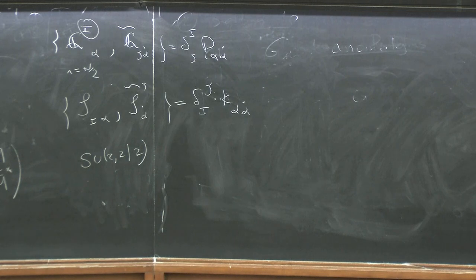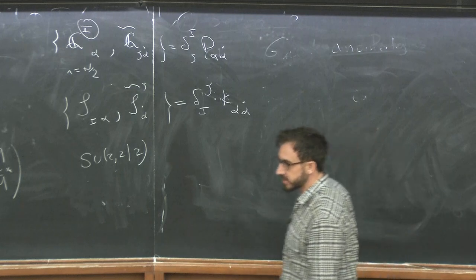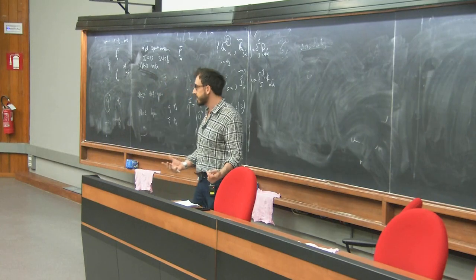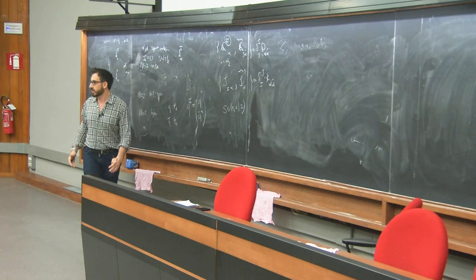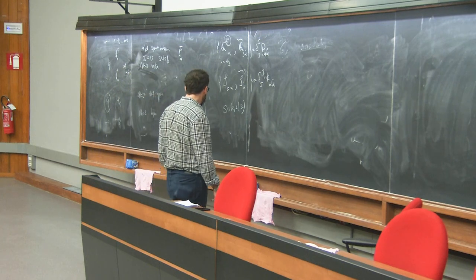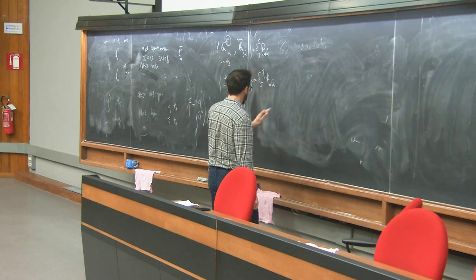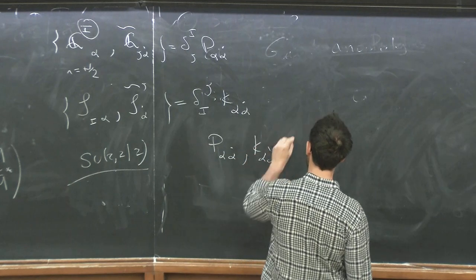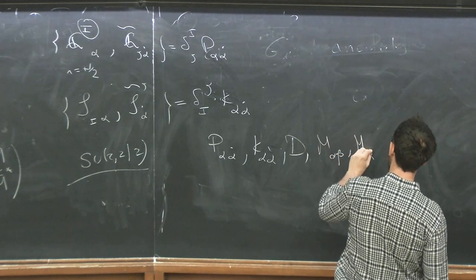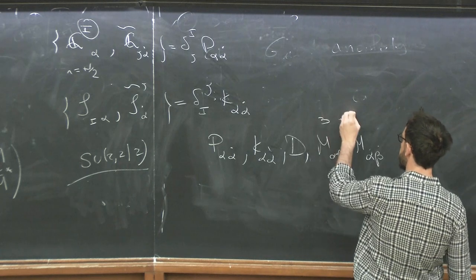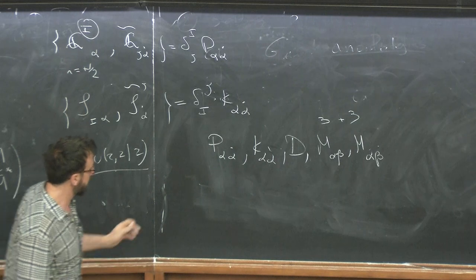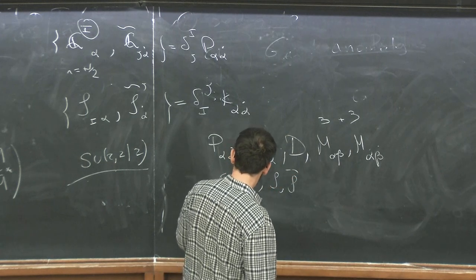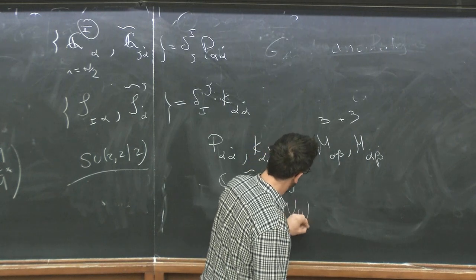There is this N=2 to 2-slash-2 algebra. If you want to learn about super algebras, Wikipedia is actually quite good — mathematicians spend an enormous time editing Wikipedia so the mathematics entries are quite good. The generators of the algebra are the momentum generators, the special conformal generators, the Lorentz generators written in bispinor notation as 3 plus 3, the fermionic generators Q, Q-tilde, S, S-tilde, and finally the SU(2)_R times U(1)_R generators.